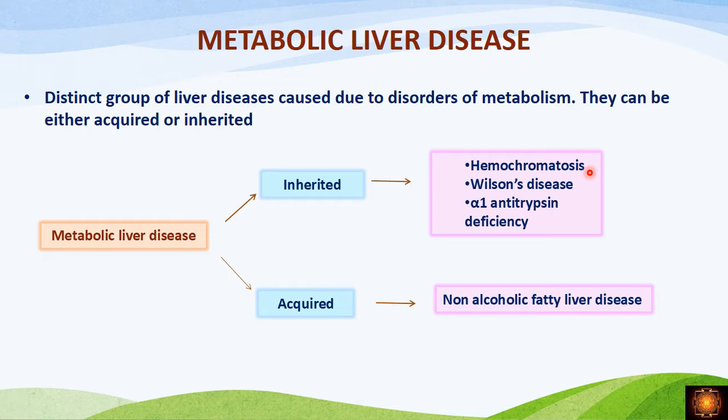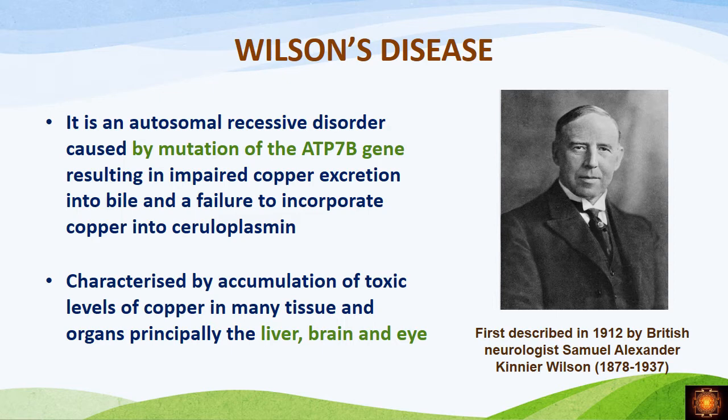We have other diseases also — hemochromatosis, already previously discussed, which is a metabolic disorder of iron metabolism. Wilson's disease is a metabolic disorder of copper metabolism, and we have alpha-1 antitrypsin deficiency, which is because of abnormality in the folding and transport of the protein. In the acquired metabolic liver diseases we have non-alcoholic fatty liver disease. Today we will be discussing about Wilson's disease, which is an abnormality in copper metabolism.